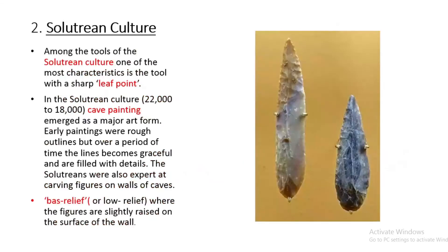The second culture is the Solutrean culture. Among its most characteristic tools is one with a sharp leaf point. Here we can see the image showing an example of a Solutrean culture tool.